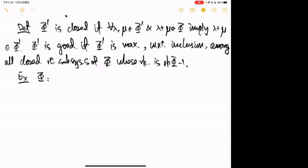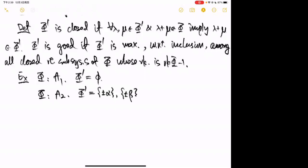If Φ is of type A₁, there is only one possibility for a good root subsystem Φ': the empty root subsystem. If Φ is of type A₂, there are three good root subsystems: {±α}, {±β}, and {±(α+β)}.